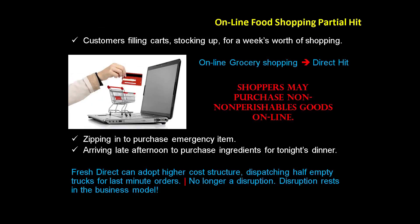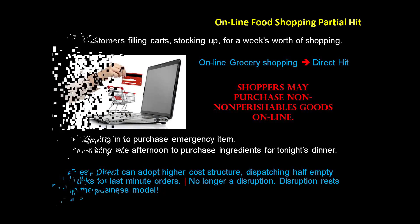So here's a recap. If Fresh Direct were to compete with the demographic of last-minute shoppers on the same day, yes, they could — they could send out dispatch trucks half empty for last-minute orders — but now they're beginning to adopt a higher cost structure, so that would no longer be a disruption. Disruption rests in the business model. For people buying non-perishable items once a week, online food shopping does have a radical cost advantage, and that would be a more complete disruption.